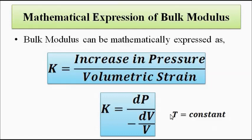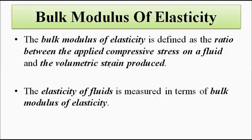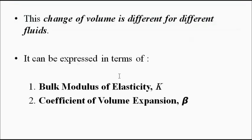An important thing to remember is that here temperature is considered constant, just for analysis purposes. In real life, temperature will not necessarily remain constant — both pressure and temperature may keep changing. For now, to understand this property, we keep temperature as constant. So bulk modulus of elasticity is the ratio between the externally applied pressure on a fluid and the resultant volumetric strain produced — it measures the degree of compression or elasticity of fluids. This is the first property that relates the change in volume or density of fluids with respect to pressure.